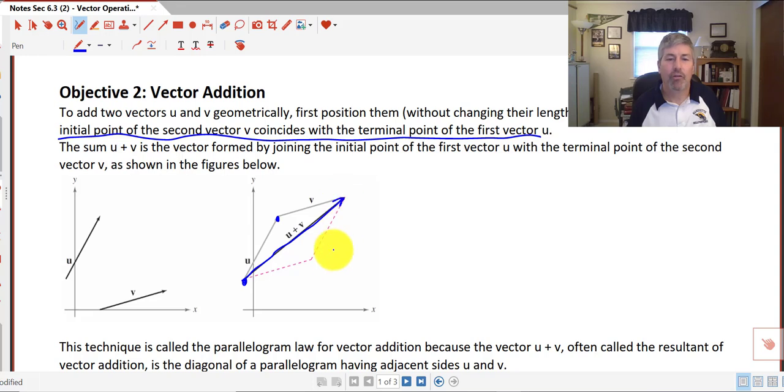And this technique is also called the parallelogram law for vector addition because the vector u plus v is the result of a parallelogram having adjacent sides u and v. So u and u make two parallel sides and v and v, and then our diagonal is u plus v.